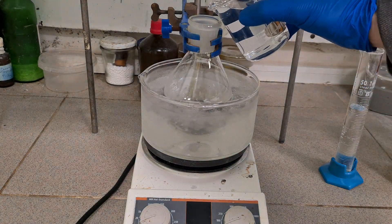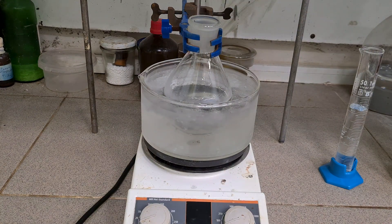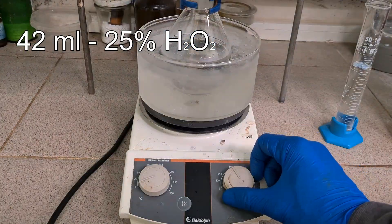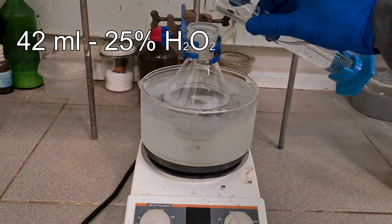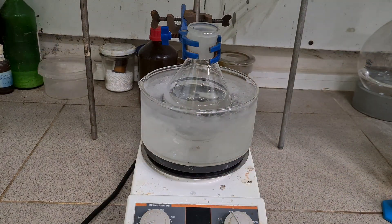Next, I pour 190ml of distilled water, then add 42ml of about 25% hydrogen peroxide. As a result, we need a 6% solution.